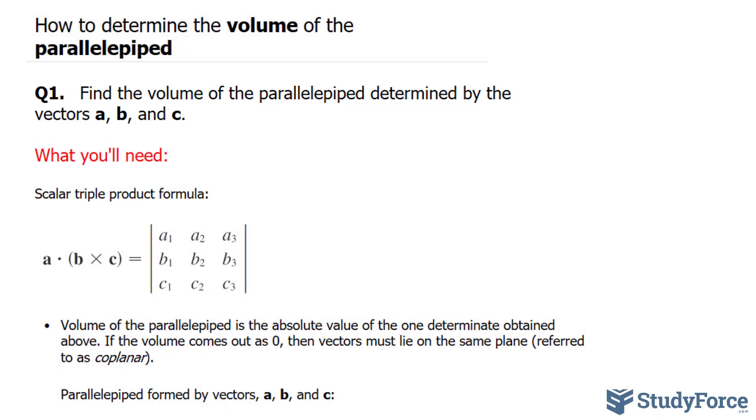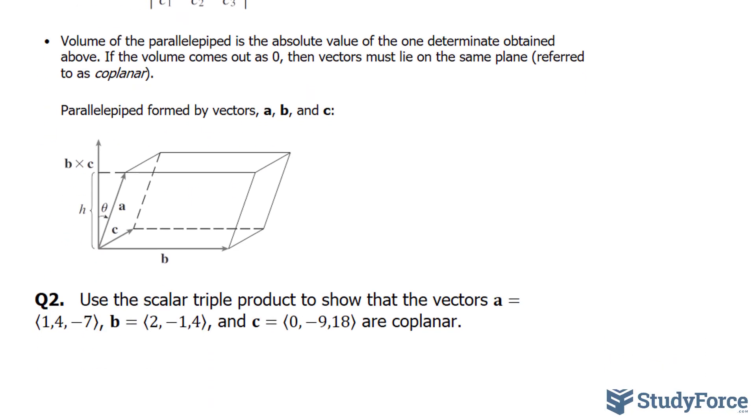Now, just to give you a visual of what a parallelepiped looks like, take a look at this illustration. Notice that this three-dimensional parallelogram is made up of three main vectors, a, b, and c.